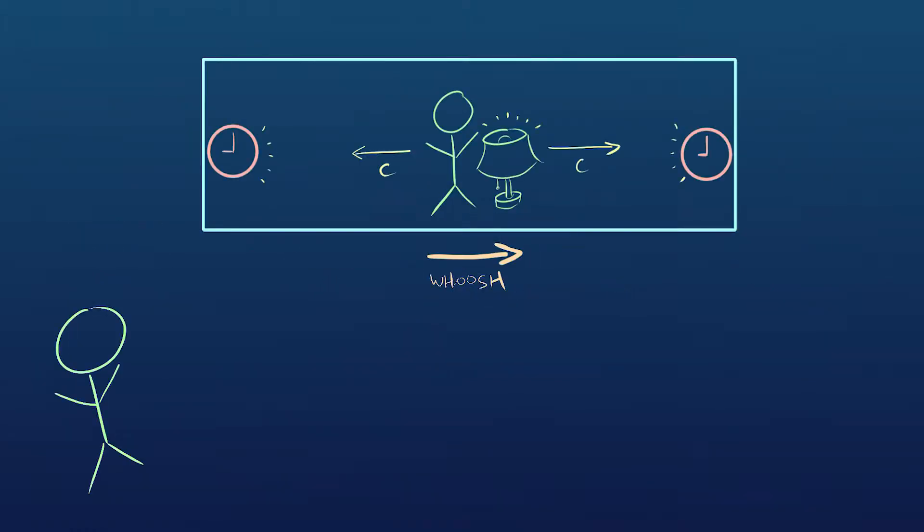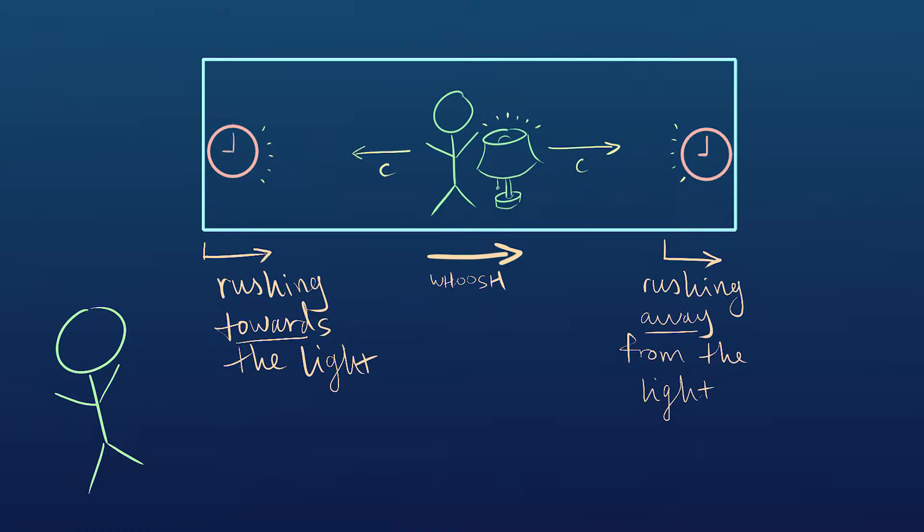But now let's imagine my frame. So I'm on the ground. In my frame, you are moving. This side is going to be rushing towards the light and this side is going to be rushing away from the light. But the light's still traveling at c in either direction after you turn on the light. So from your point of view, both clocks get hit at the same time. But from my point of view, this one has to get hit first. But both clocks still have to say three o'clock when they get hit.